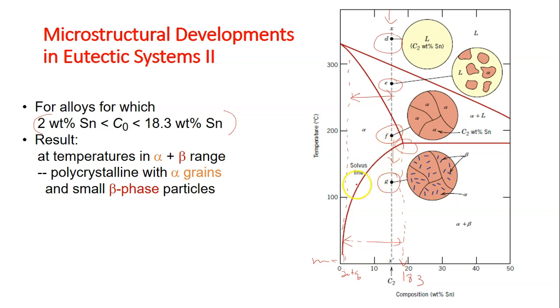it will cross this solvus line and enter this alpha plus beta solid solution region. So let's look at this point G in which we are taking, we are focusing on C2 here, this type of composition.